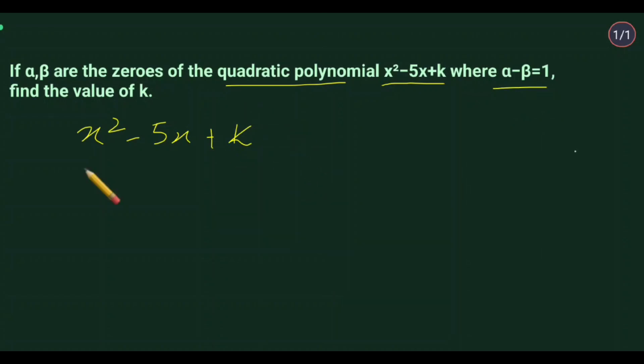When you have a quadratic polynomial given, you can find α + β and αβ - that is, the sum of zeros and product of zeros. So α + β equals -b/a and the product αβ equals c/a.